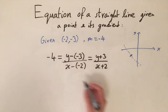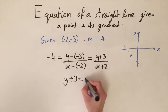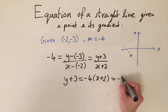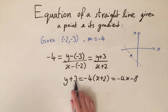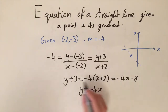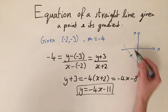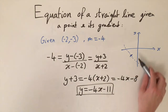Multiplying through by the denominator gives y plus 3 equals minus 4 times x plus 2. Expanding gives minus 4x minus 8. Subtracting 3 from both sides gives the equation y equals minus 4x minus 11. This is the equation of the line — the only equation satisfying a gradient of minus 4 that passes through the point (-2, -3).